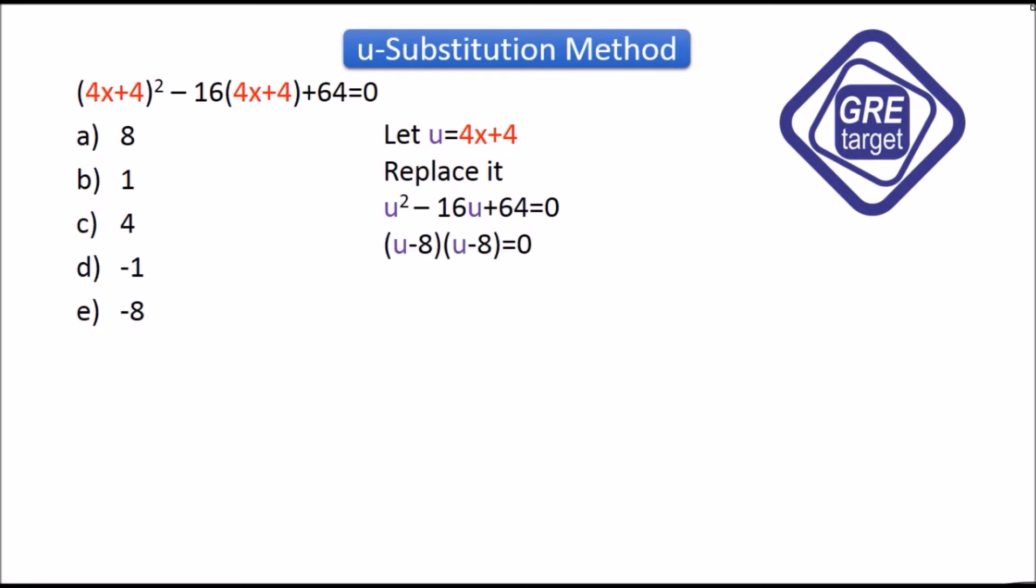Therefore, (u-8)(u-8) = 0. Now the further step is u-8 = 0, therefore u = 8. But the answer is not completed yet because we have replaced u with 4x+4.